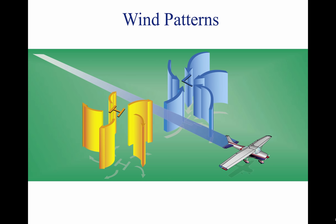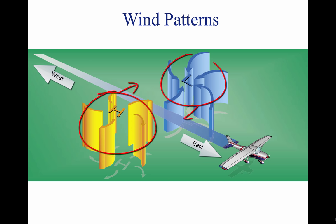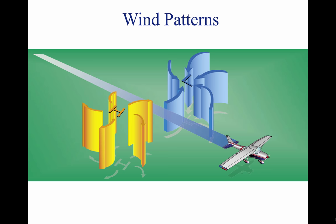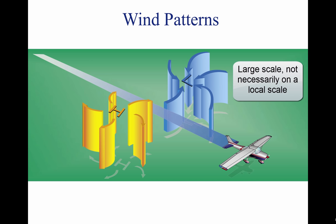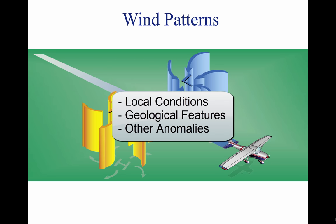A good understanding of high and low pressure wind patterns can be of great help when planning a flight, because a pilot can take advantage of beneficial tailwinds. When planning a flight from west to east, favorable winds would be encountered along the northern side of a high pressure system or the southern side of a low pressure system. On the return flight, the most favorable winds would be along the southern side of the same high pressure system or the northern side of a low pressure system. While the theory of circulation and wind patterns is accurate for large-scale atmospheric circulation, it does not take into account changes to the circulation on a local scale. Local conditions, geological features, and other anomalies can change the wind direction and speed close to the Earth's surface.